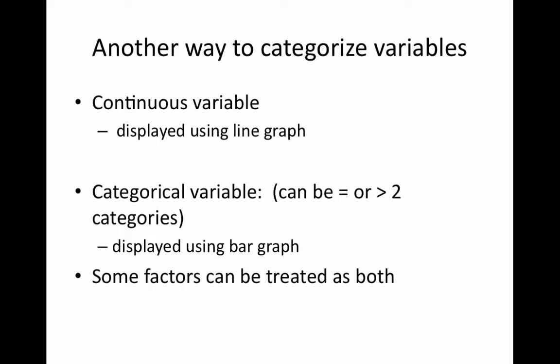Another way to categorize variables is as continuous or categorical. Continuous variables are displayed using a line graph, while categorical variables are displayed using a bar graph. For example, tones can be presented to the ear binaurally or monorally. Some factors can be treated as both continuous and categorical.